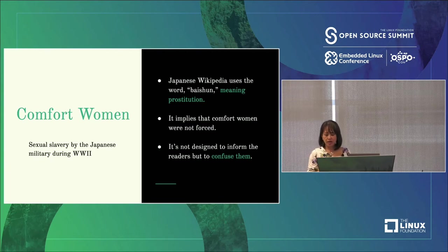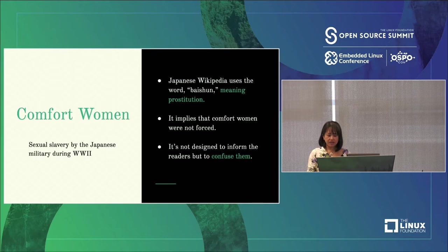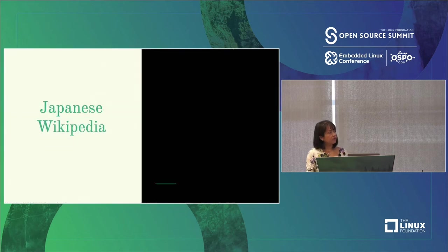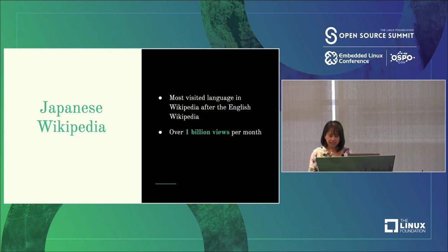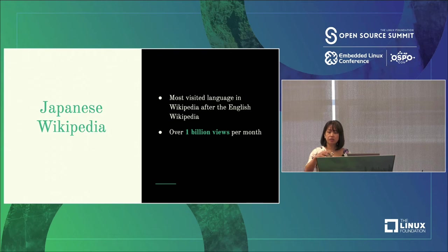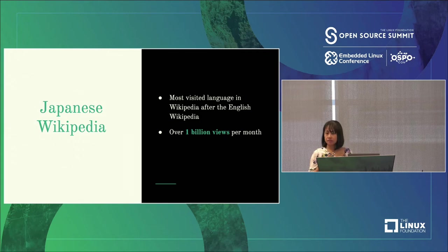Propaganda makes you doubt things that you thought you knew rather than trying to convince you otherwise. Page after page I found examples of historical revisionism. Japanese Wikipedia is actually very popular — it's the most visited language version of Wikipedia after English, receiving on average 1 billion page views per month. And much like with English search results, every time you search any topic in Japanese, the first result is usually a Wikipedia page. So it's very influential.